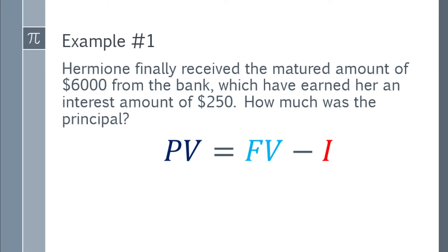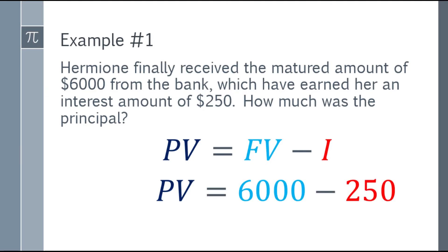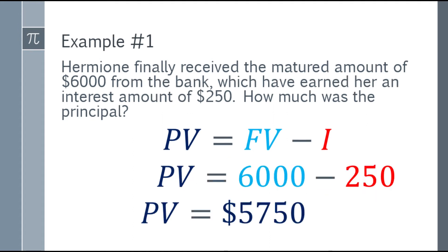PV or present value is equal to future value minus the interest amount. Why use this formula? Because in the given, you only have the future value and you have the interest amount. So let's substitute the given. Present value is equal to $6,000 minus $250. So the answer for this one is $5,750. So the amount she deposited was $5,750 which earned her an interest amount of $250. So the future value is $6,000.